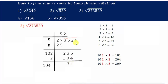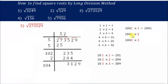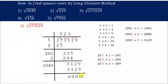Now bring down 29, giving 3129. This side we have 104. Pick 104 and start pairing: 1041×1=1041, 1042×2=2084, 1043×3=3129. We get the exact number 3129. So 1043×3=3129. Subtract 3129 minus 3129 and we get 0 as the remainder. So the root of 273529 is 523.